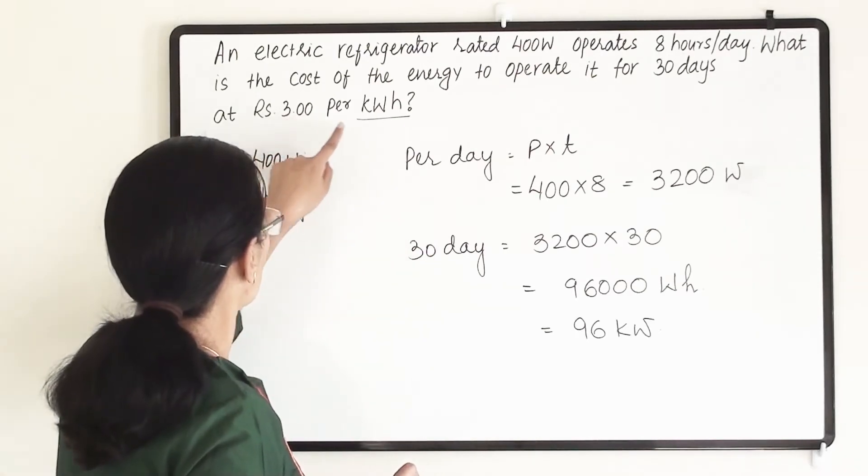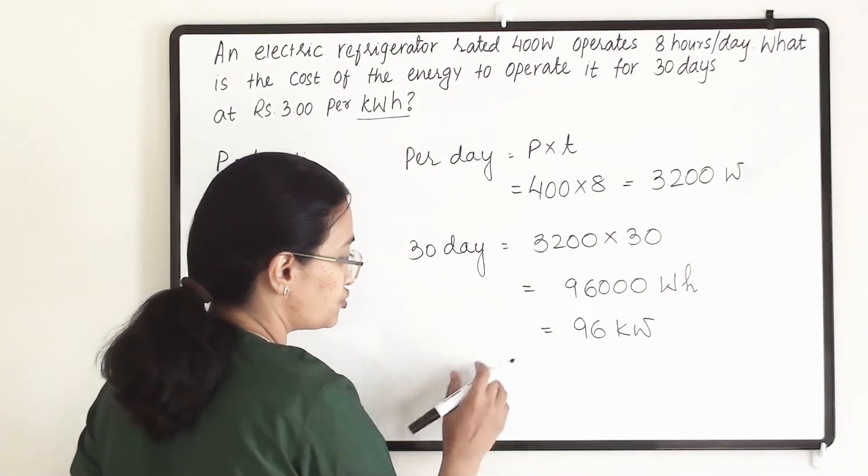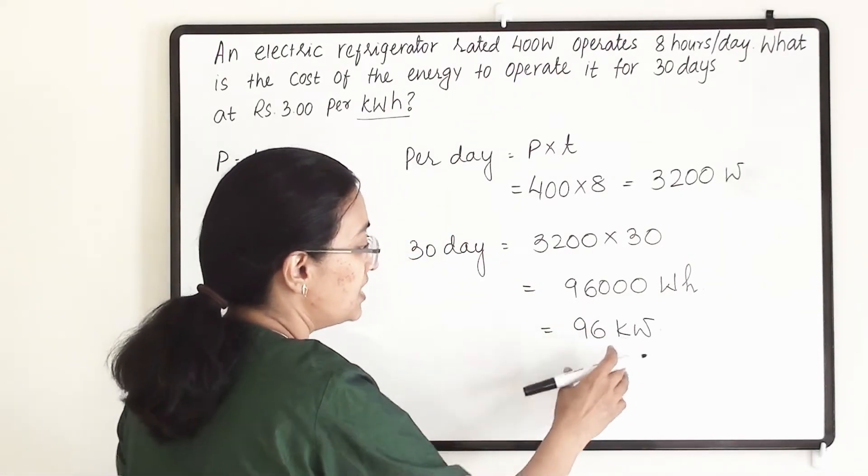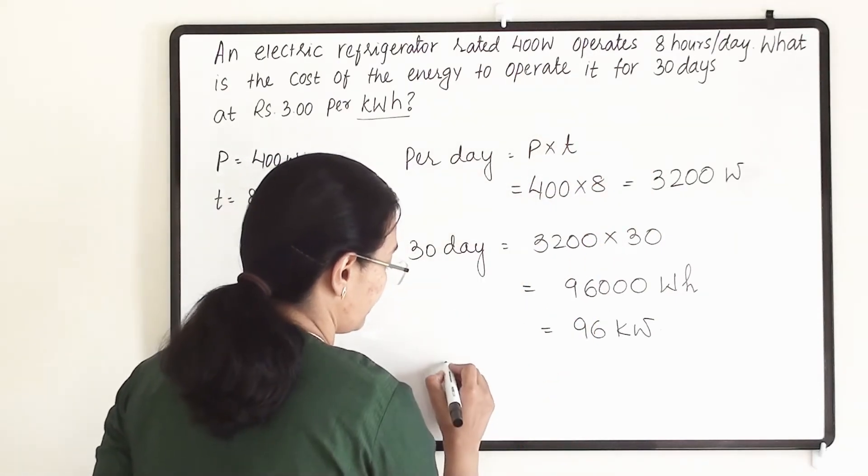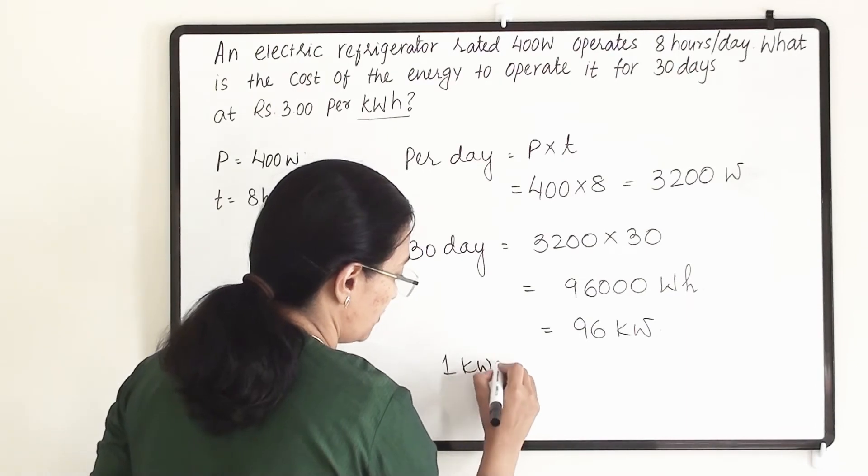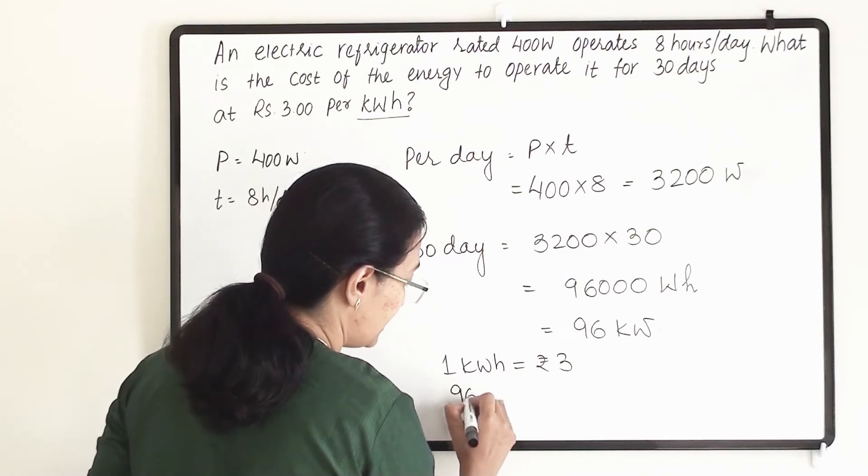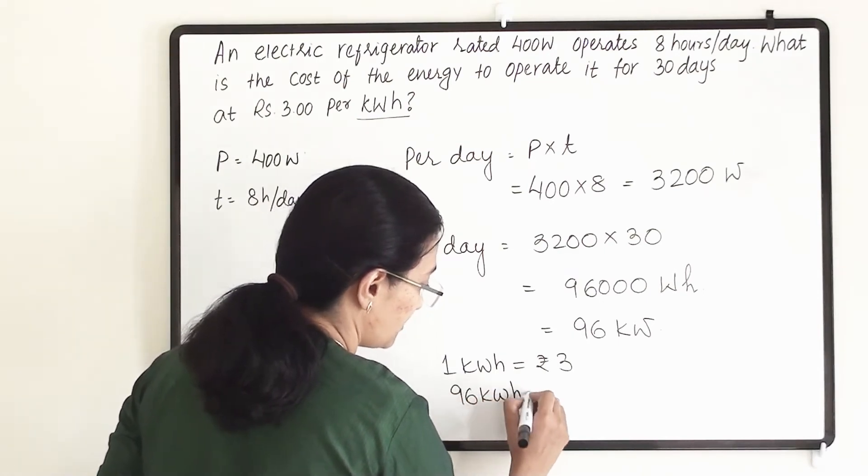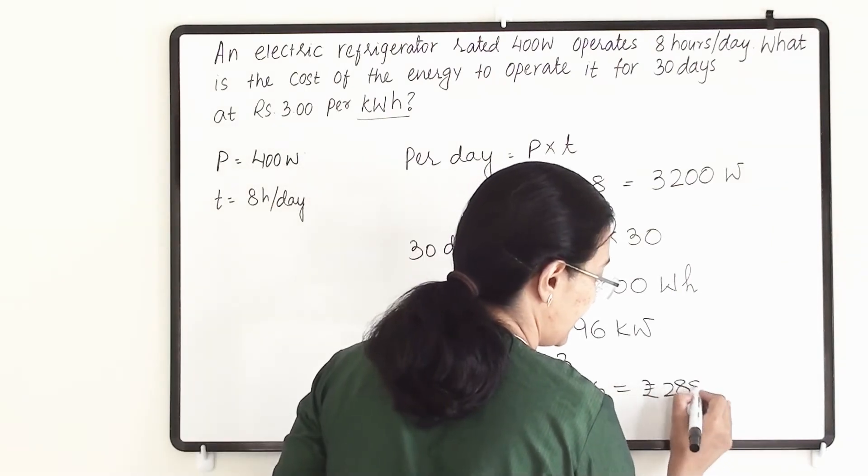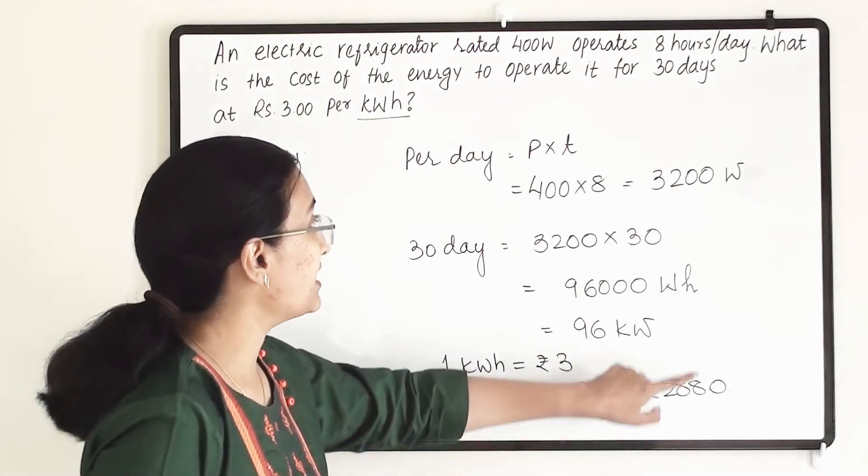Now kilowatt hour charge is 3 rupees. We have 96 kilowatt hour. So when we are consuming 1 kilowatt hour we have to pay rupees 3. We have 96 kilowatt hour. So we need to pay 3 into 96 equals to rupees 288.